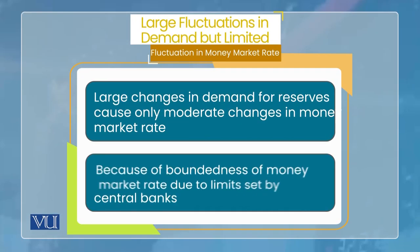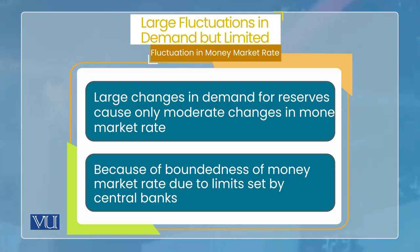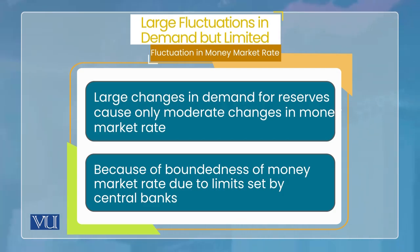وجہ یہ ہے کہ demand اور supply میں changes آتی رہیں — چھوٹی آئیں تو money market rate میں تھوڑا change آئے گا۔ لیکن ہم بات کر رہے ہیں جب demand میں بہت بڑا change آ جائے یا supply میں بہت بڑا change ہو جائے — پھر تو rate کو بھی بہت بڑے نمبر سے change ہونا چاہیے، لیکن پھر بھی نہیں ہوتا، اس لیے کہ ceiling اور floor اس کی movement کو restrict کر دیتے ہیں۔ اس لیے interest rate کی fluctuation زیادہ نہیں ہوگی باوجود اس کے کہ demand اور supply میں بڑی changes آ جائیں۔